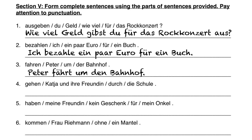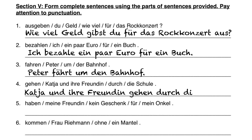Peter is driving around the train station. In Nummer vier we have a compound subject — Katja und ihre Freundin, Katja and her friend. We conjugate gehen to go with that, which is gehen. Then durch die Schule doesn't change because it's still accusative, but it's feminine, so it stays die Schule. Katja und ihre Freundin gehen durch die Schule.